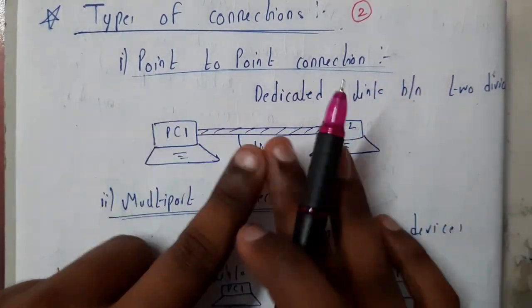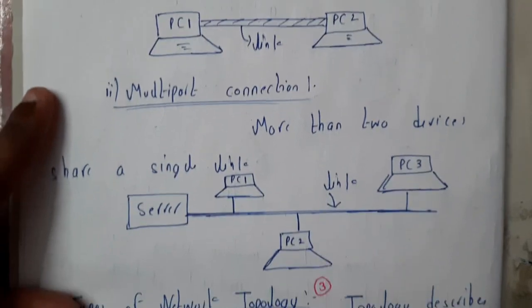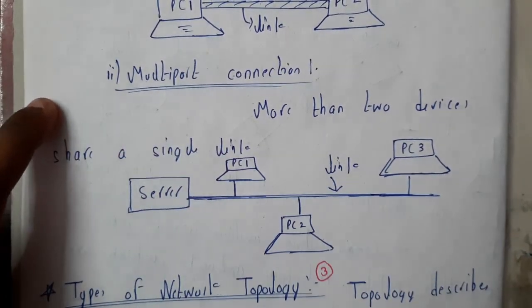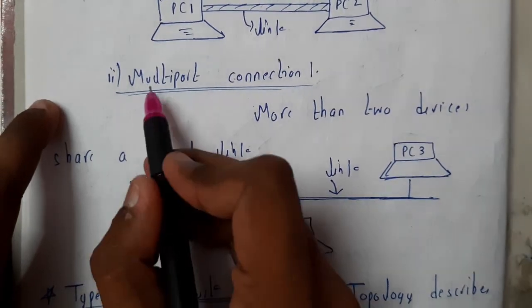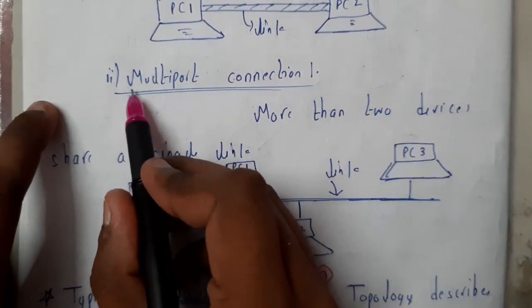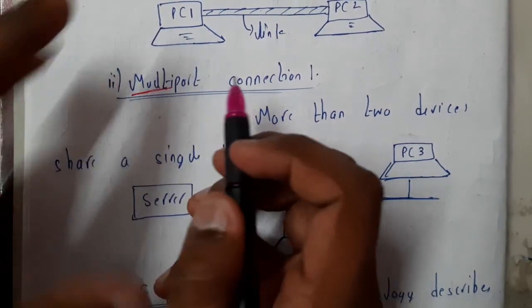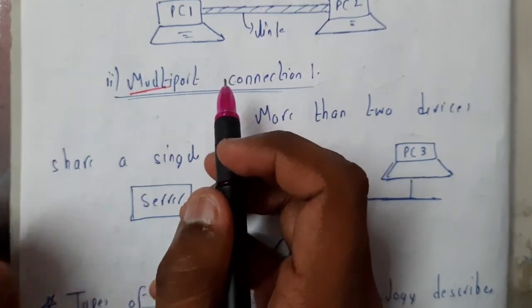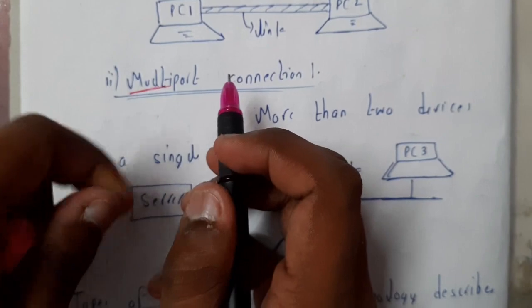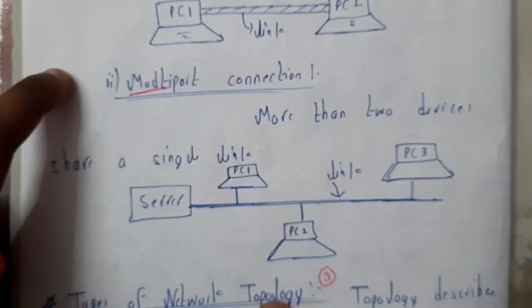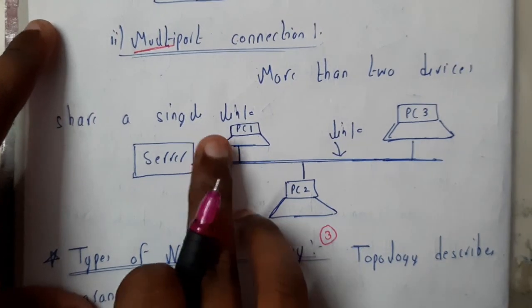Okay, let us continue. So the second type is multi-port connection. Here we are having multi-port, so we will be having some multiple ports to which we will be connecting our systems, and a single server will be giving the data for all those things. So let us go through the diagram so that we will be having an idea. So this is our...